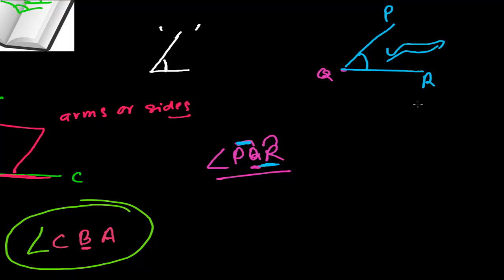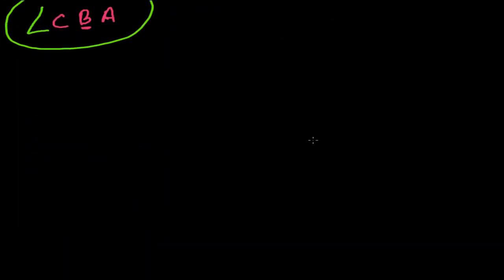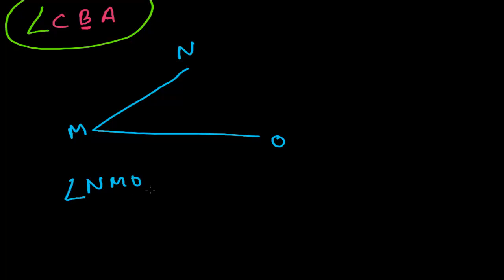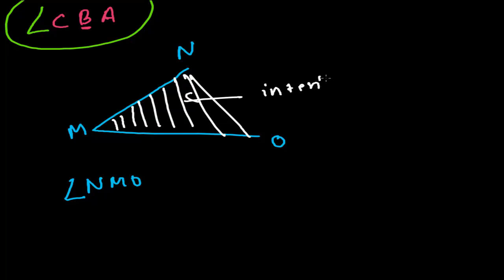Now let's learn about the interior and exterior parts of an angle. Suppose I have angle NMO. The internal region between the two arms is called the interior of the angle. The region outside the two arms is called the exterior part of the angle.